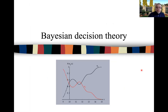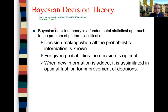Let's look at how we perform classification using Bayesian decision theory. Bayesian decision theory is a fundamental statistical approach to the problem of pattern classification. Decision making is performed when all the probabilistic information is known. For given probabilities, the decision is optimal with a Bayesian decision approach. When new information is added, it is assimilated in an optimal fashion for improvement of your decisions.